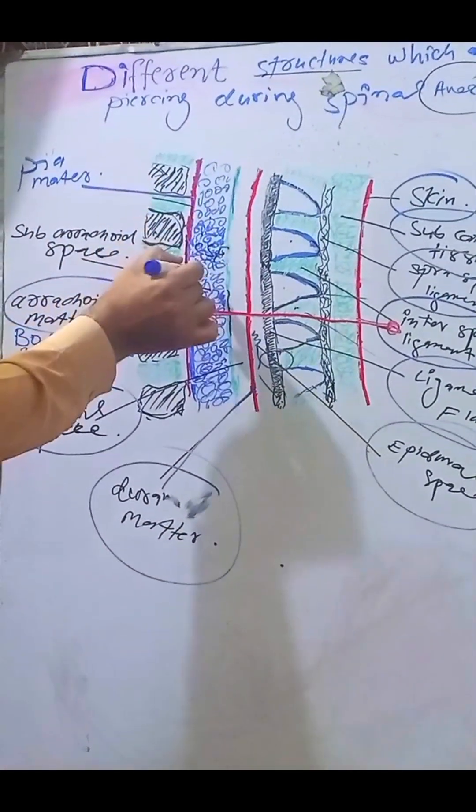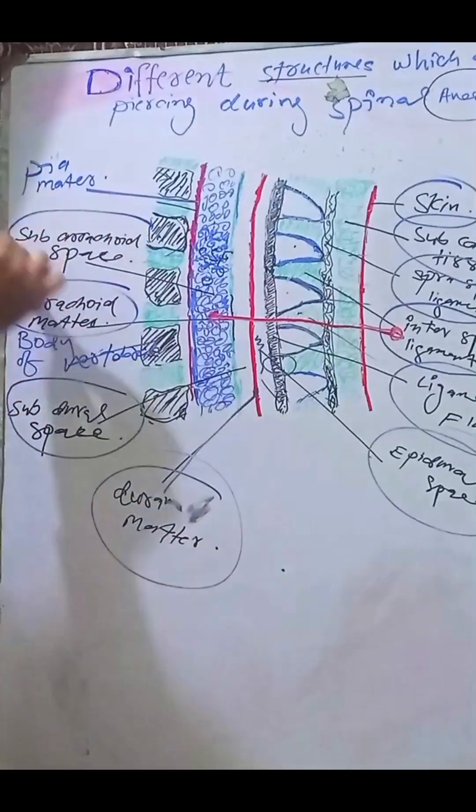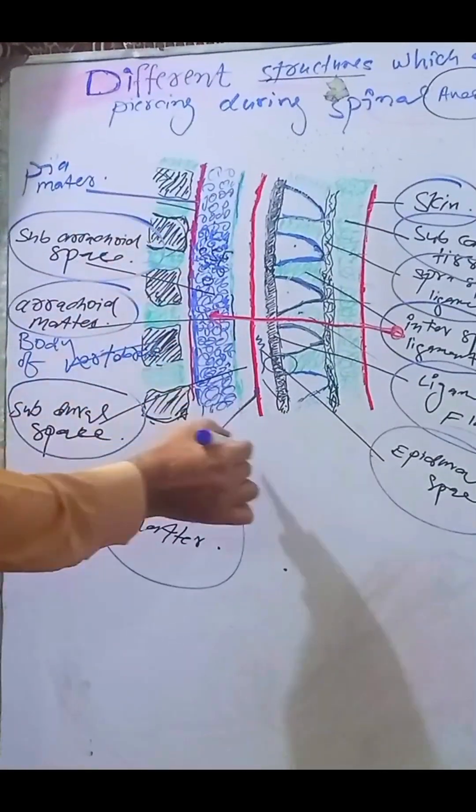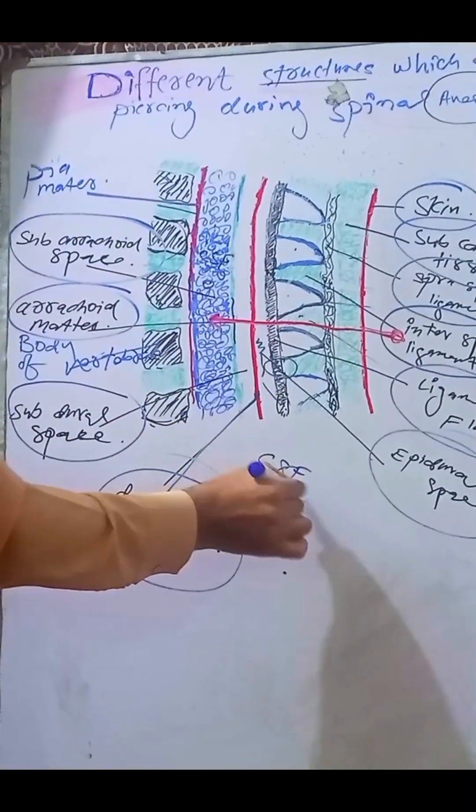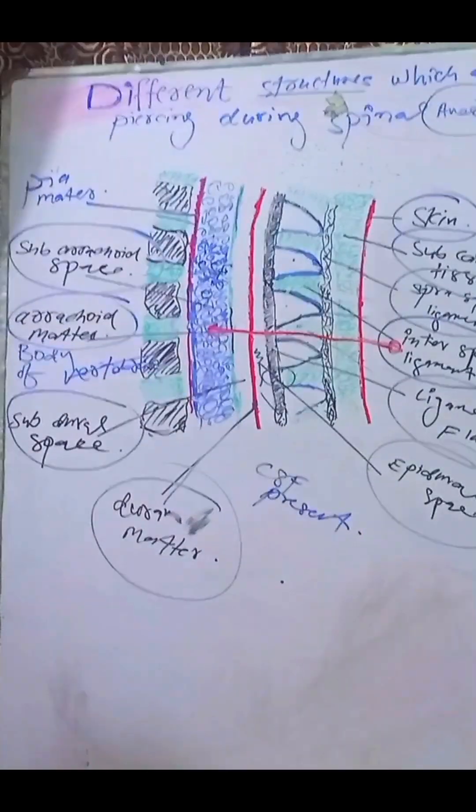And another layer is pia matter. Between these layers is the subarachnoid space where CSF is present. This is all about the structures or layers that we pierce during spinal anesthesia. Thanks for watching.